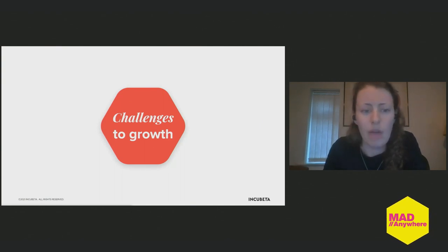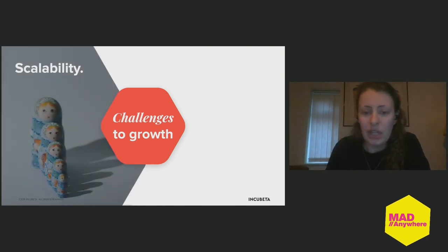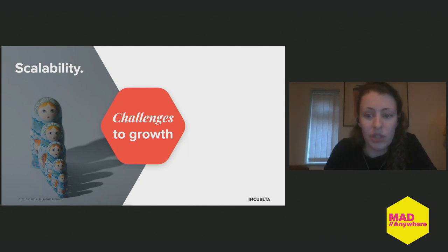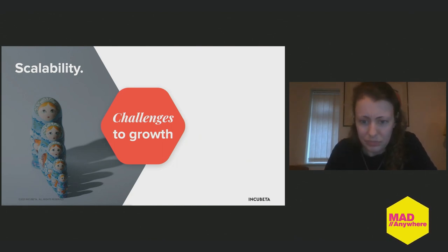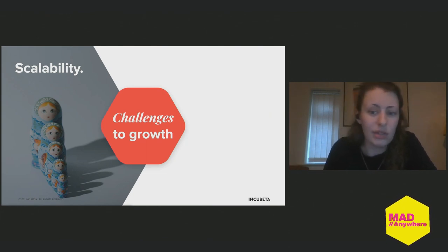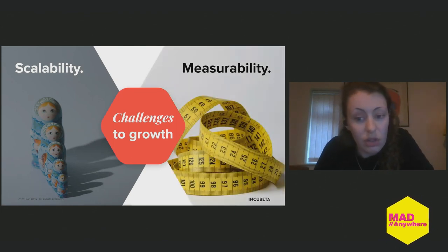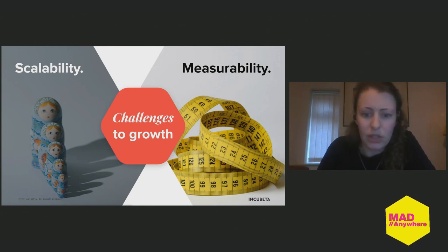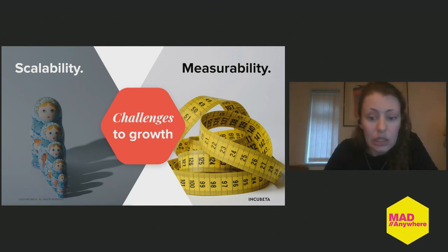There are a couple of challenges to how we grow influencers. The first is scalability. Each influencer typically has a limited audience and the majority of posts have limited longevity. Scale has to come from multiplying the number of influencers and posts, but the management is quite resource-intensive and not easily automated. The second challenge is measurability. Everyone knows the challenges of measurement on social platforms, and it's a lot worse for organic than paid campaigns, with restricted insight and limited third-party tracking. Affiliate links and voucher codes help but have significant blind spots.